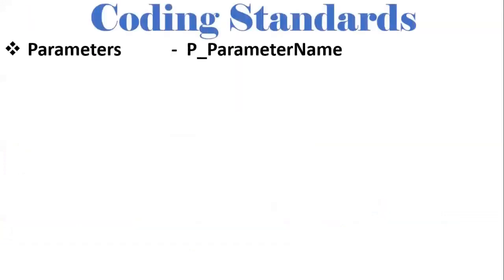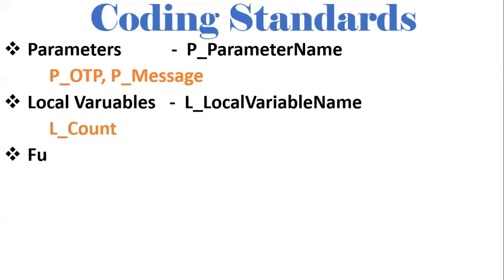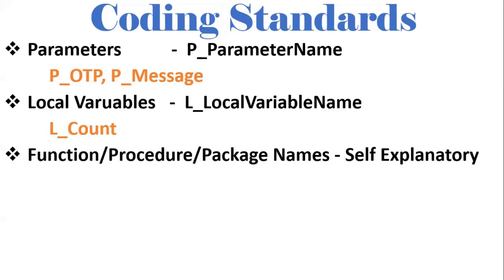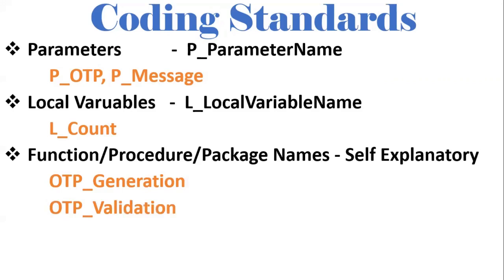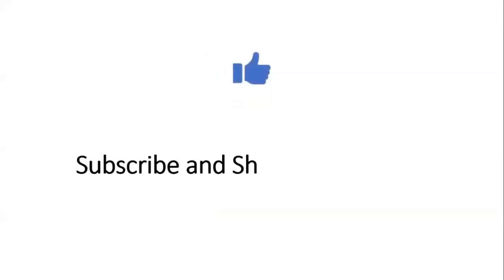Regarding coding standards: in real-time projects, we need to follow coding standards so that the code is easy to read and understand. For parameters, it should be P_OTP or P_MESSAGE. For local variables, it should be L_COUNT. Function, procedure, or package names should be self-explanatory — for example, OTP_GENERATION means it generates OTP, and OTP_VALIDATION means it validates OTP. Try to solve this type of requirement to improve your coding skills and logical thinking. If you like the content, please subscribe and share the channel. Thank you for watching.